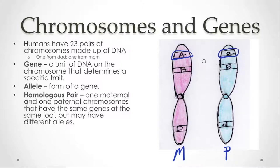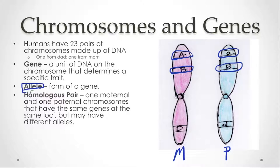For example, this could be gene A. We see that the maternal copy has the dominant form of gene A, and the paternal copy has the recessive form of gene A. Whereas gene B, both maternal and paternal chromosomes have the dominant form of that particular gene. Allele is the term that we use to describe the form of a gene. You can have a dominant or recessive allele for either of these particular traits.